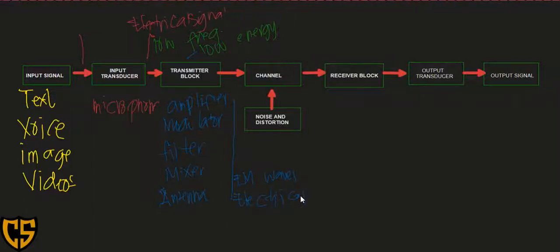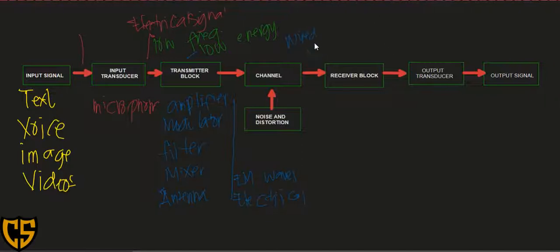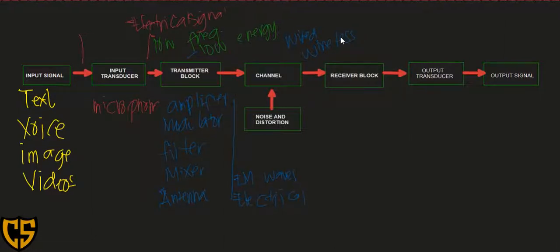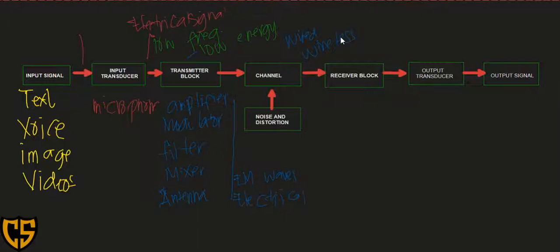The channel is classified into two types: wired communication or wireless communication. For wireless communication, examples include microwave communication and satellite communication. For wired communication, very common examples include optical or fiber optics communication, and also copper-based communication using coaxial wires.